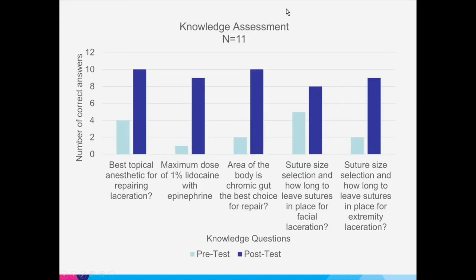For the knowledge assessment, residents improved quite a bit across all of the questions. There were still a couple where they had some difficulty with suture selection, but some of that is in the take-home card — we don't necessarily expect them to memorize it, as it can be easily referenced. We gave them a quick handy reference for where they could find that information. All residents showed an improvement on the post-test.